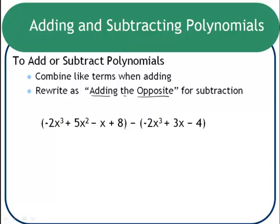When subtracting, the parentheses do matter. This parentheses here indicates that this whole polynomial is being subtracted. That means each of these terms is being subtracted. So I'm subtracting negative 2x cubed, I'm subtracting 3x's, and I'm subtracting negative 4.